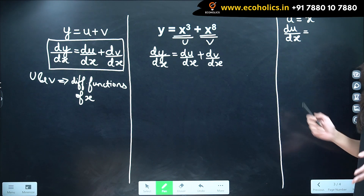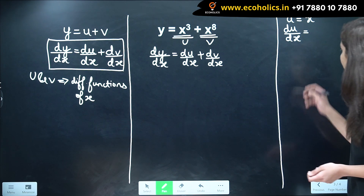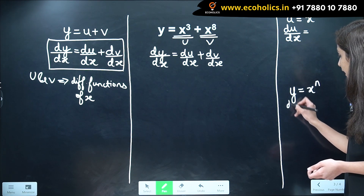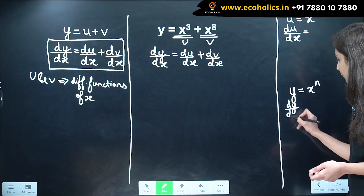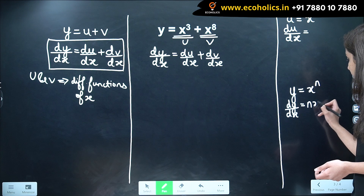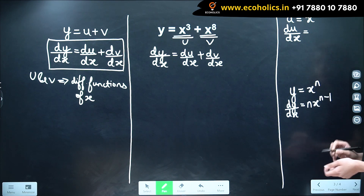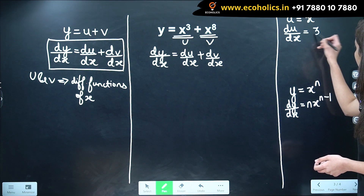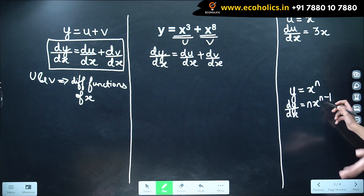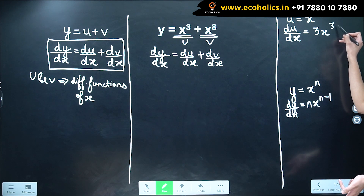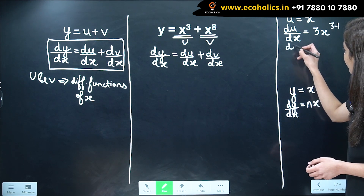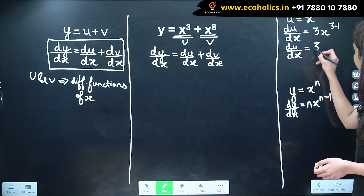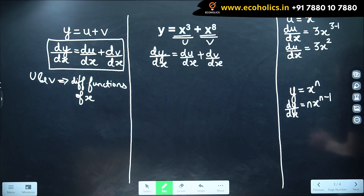We'll use the power function rule of differentiation. Given y is equal to x raised to n, then dy by dx is equal to n x raised to n minus 1. In this case, n is equal to 3, so we get 3 x raised to 3 minus 1, which is 2. Therefore, du by dx is equal to 3x squared.